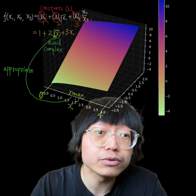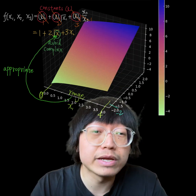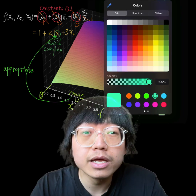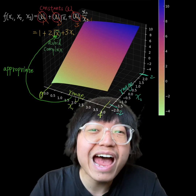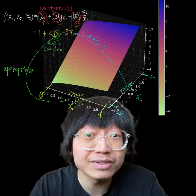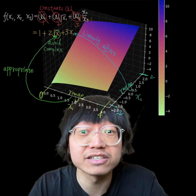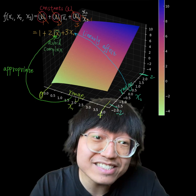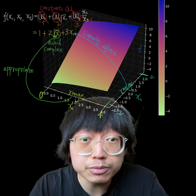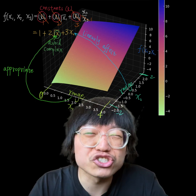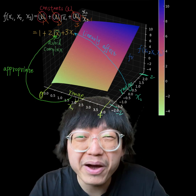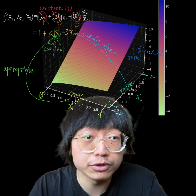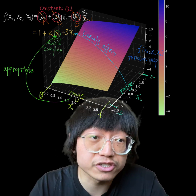The x₂ axis ranges from negative 2 to positive 2, showing how changes in x₂ linearly affect this function. The z-axis represents the function's output, showing the combined influences of both x₁ and x₂ on the function f.